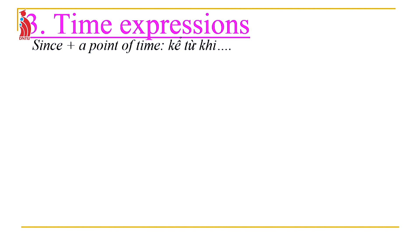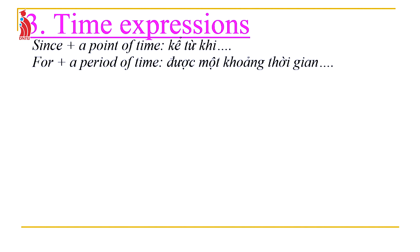'Since' is followed by a point in time, meaning 'from a specific moment.' 'For' is followed by a period of time, indicating how long something has lasted. 'Just' means 'a moment ago' — note that 'just' is placed between the auxiliary have/has and the past participle.